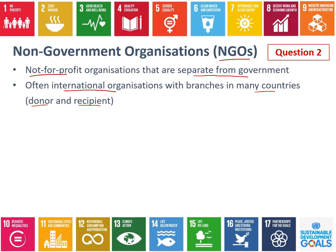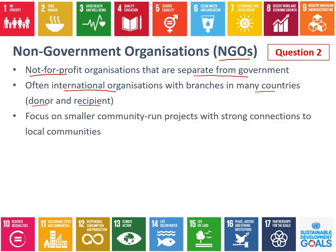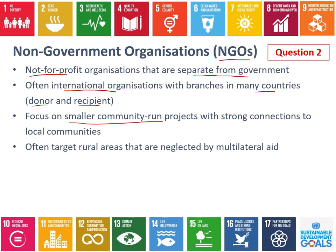You would have an office in a country that might be organising activities, and then obviously offices in countries that are receiving that aid or that support. A really big benefit of non-government organisations is they tend to focus on smaller community-run projects, so they have really strong connections with local communities. One of the disadvantages of bilateral and multilateral aid is that they tend to focus on big urban areas, whereas NGOs often target rural areas or smaller areas that tend to be a bit neglected by multilateral aid.